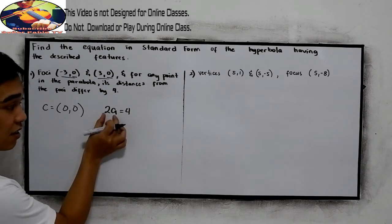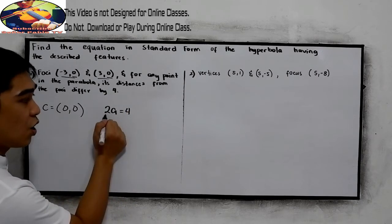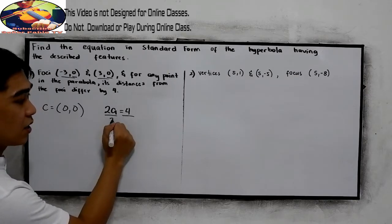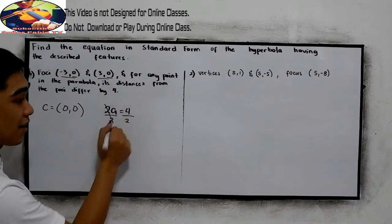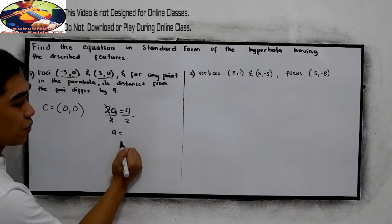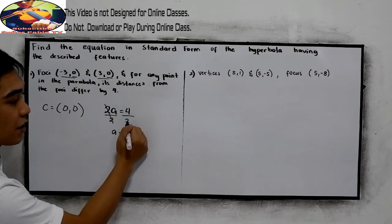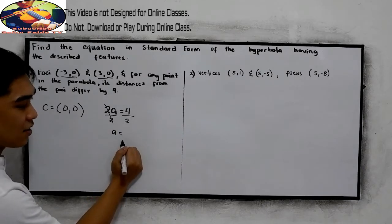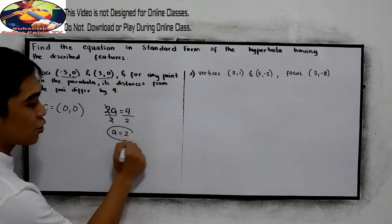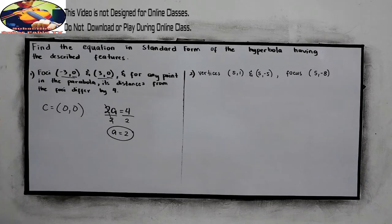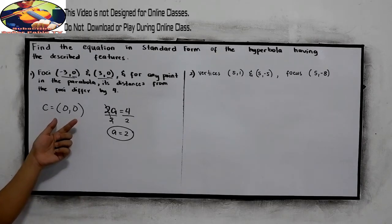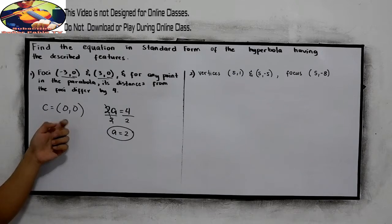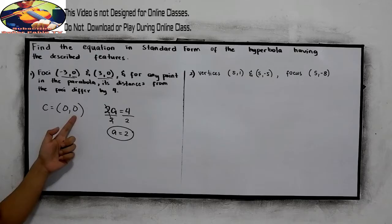To find a, we divide by 2. So a is equal to 4 divided by 2, which is 2. This will be our a. Since the center is (0, 0),